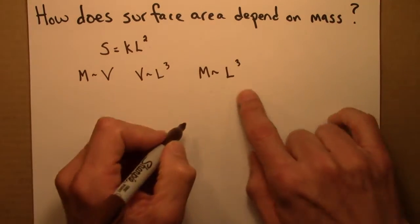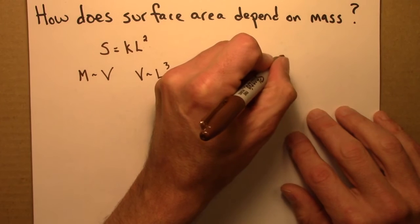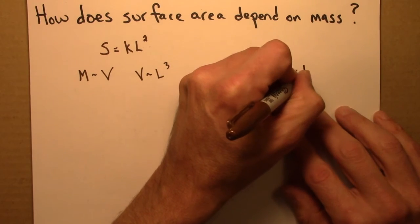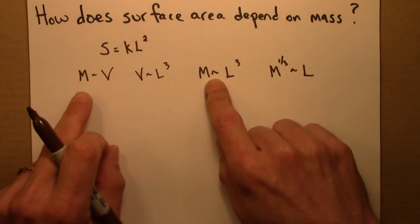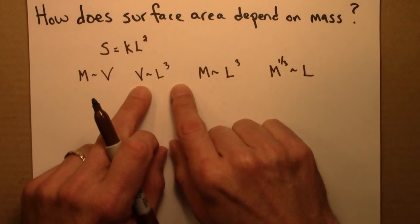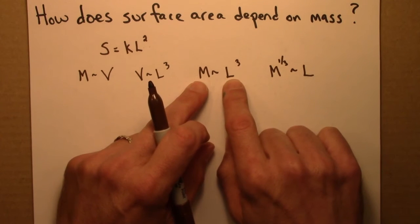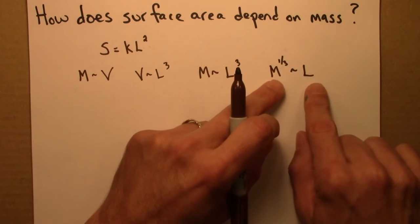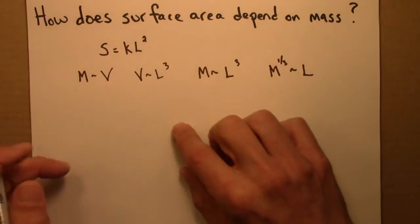If I take the third root of both sides... So mass is proportional to volume, volume is proportional to L cubed, that means mass is proportional to L cubed. I can take this relationship, take the cube root of both sides and get this. So now let's go back to thinking about surface area.